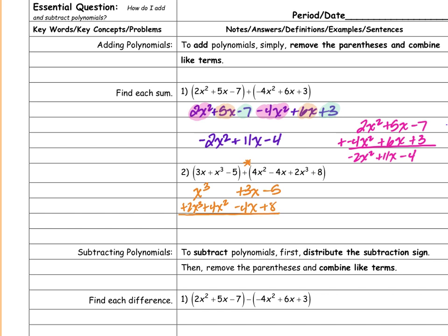Now I'm just going to add them together like I did on the other part. So 1 plus 2 is 3x cubed. There's nothing to add with the x squared, so that just stays the same. And then 3 minus 4 would be negative 1x.